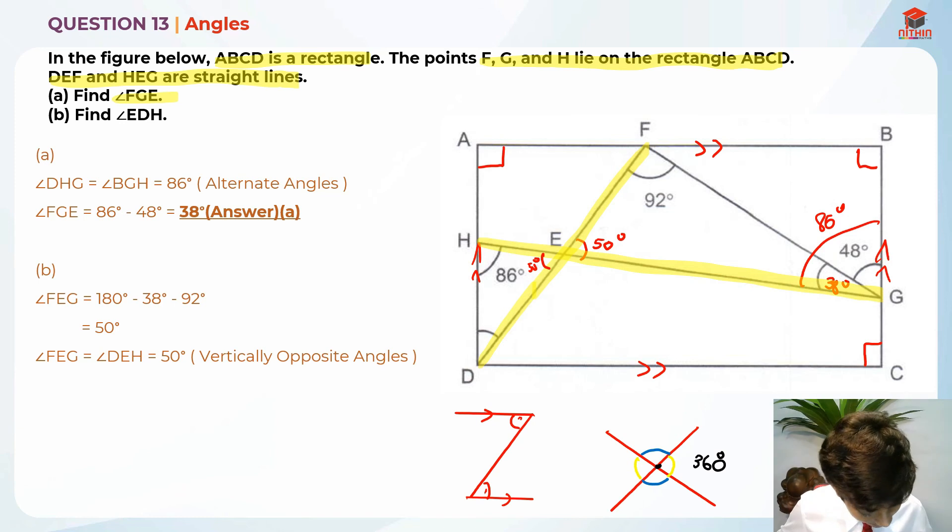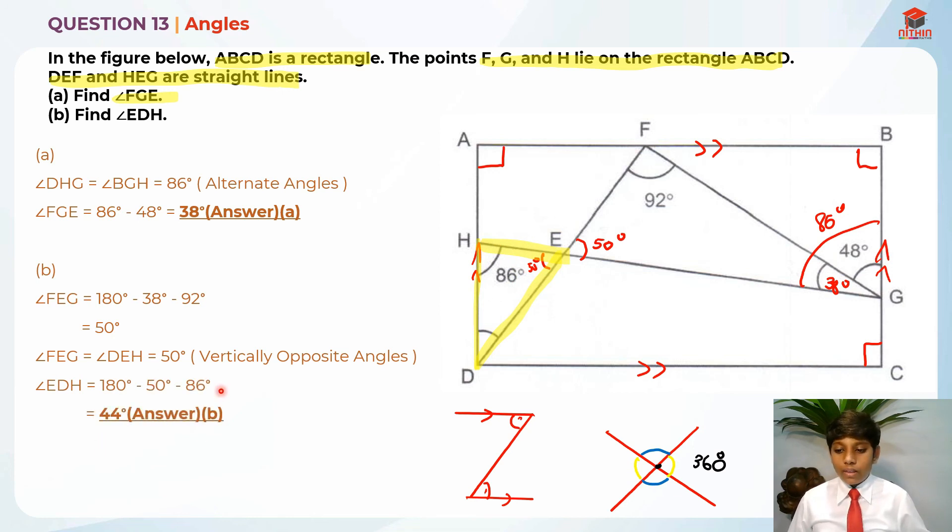So basically, this is also 50 degrees. So angle FEG is equal to angle DEH is equal to 50 degrees because of this property known as vertically opposite angles. Now you should be able to see a clue. Let me highlight something. Look at this. Look at this amazing piece. It's a triangle. Yes. And we already know two angles. So basically, it's really easy to find it. So it's just 180 degrees minus 86 minus 50 degrees. So that's the answer. And the answer is 44 degrees. So angle EDH is equal to 44 degrees for this question.